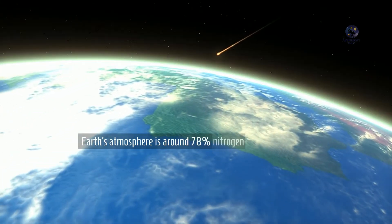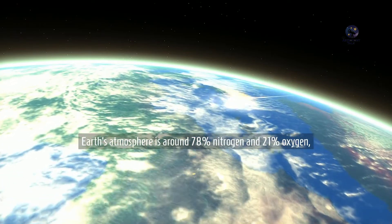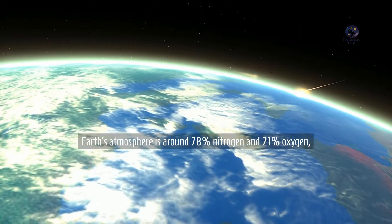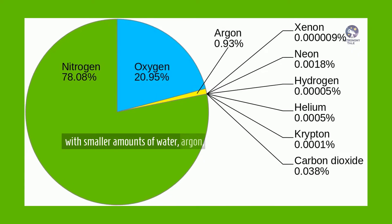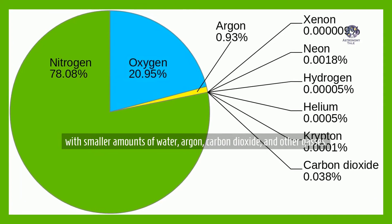Earth's atmosphere is around 78% nitrogen and 21% oxygen, with smaller amounts of water, argon, carbon dioxide, and other gases.